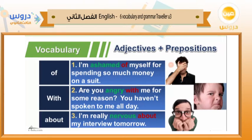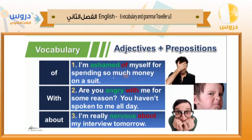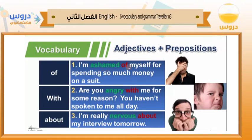For example, with the prepositions 'of', 'with', and 'about', the meaning is different as we move through sentences. 'I am ashamed of myself for spending so much money on a suit.' Here 'ashamed' is the adjective and the preposition is 'of' — we say 'ashamed of', not 'ashamed in' or 'ashamed by'. This means you really regret and blame yourself for buying an expensive suit. Now with 'with': 'Are you angry with me? You haven't spoken to me all day.'